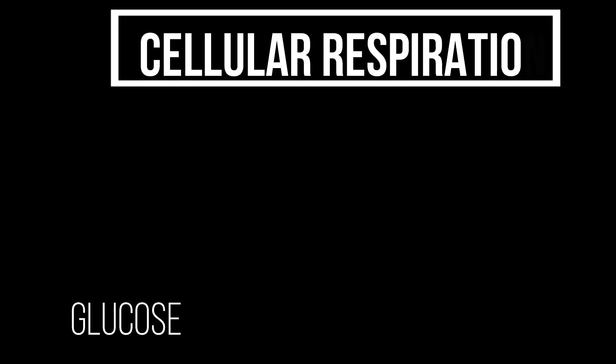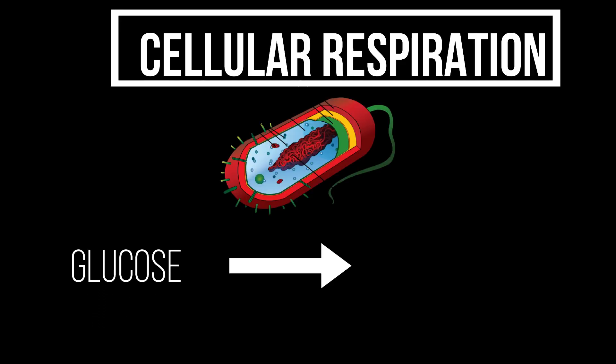Cellular respiration is really important because it's the process by which the cell takes glucose and converts it into ATP, giving the cell the energy it needs to perform essential life functions. So you may be wondering, how does the cell get glucose?